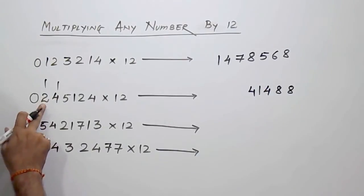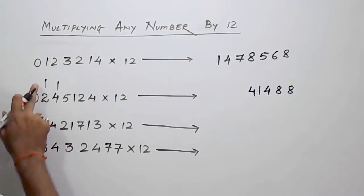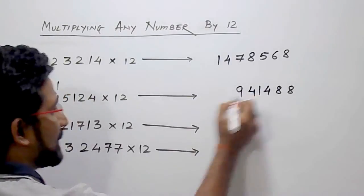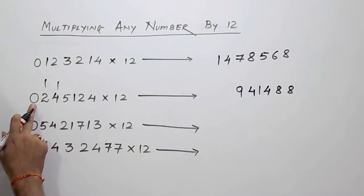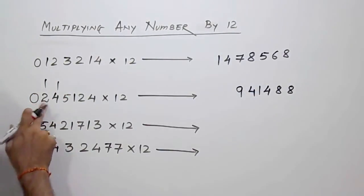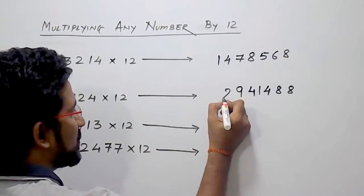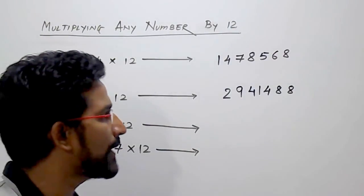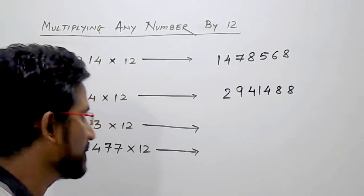Then 2 — 2's double is 4, 4 plus 4, that is 8, 8 plus 1, that is 9. And then 0 — 0's double is 0, 0 plus 2, that is 2. So the answer will be 2, 9, 4, 1, 4, 8.